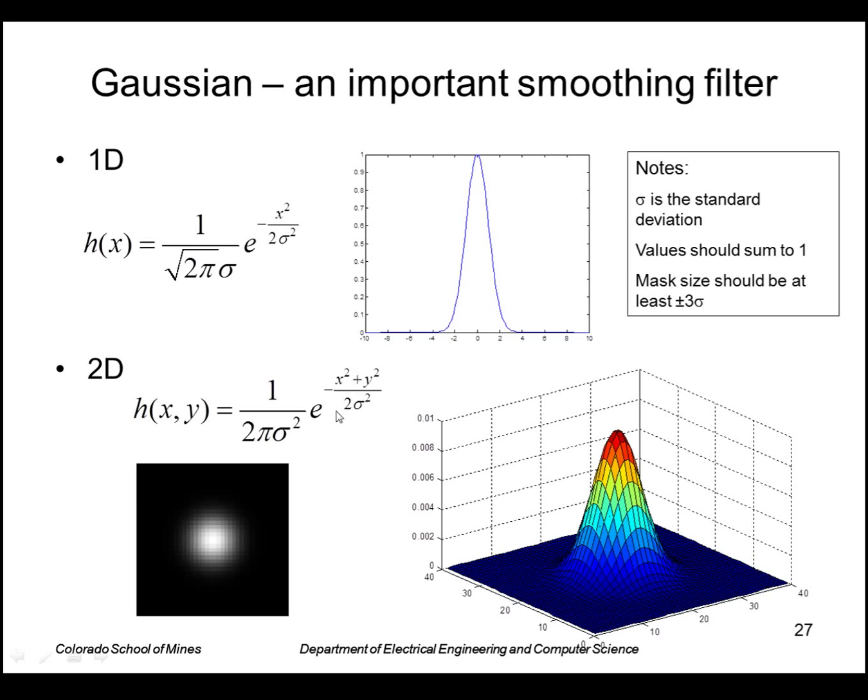In two dimensions it's e to the minus x squared plus y squared over two sigma squared. And it's normalized so that the area equals one, the volume I mean.